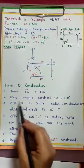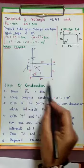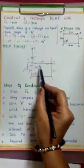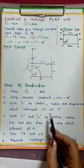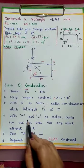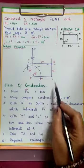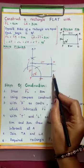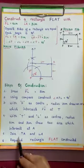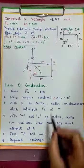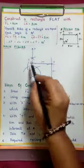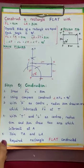Now see the steps of construction: Draw FL = 5 cm. Construct angle XFL = 90 degrees. With F as center, radius 3 cm, draw an arc which intersects FX ray at T. With T and L as centers, radius 5 cm and 3 cm, draw two arcs which intersect at A. Join TA and LA. The required rectangle FLAT is constructed.